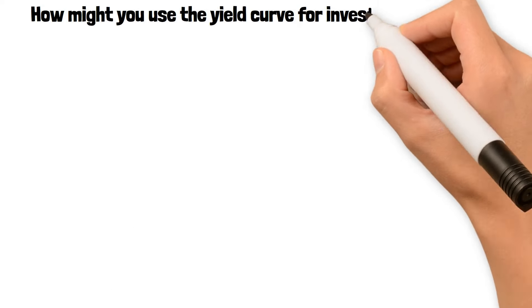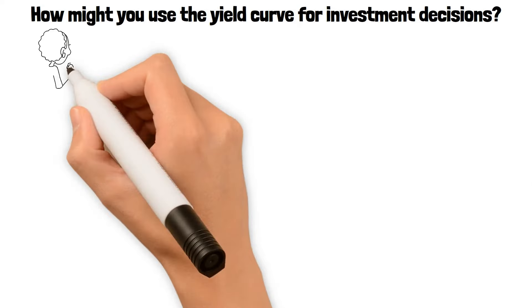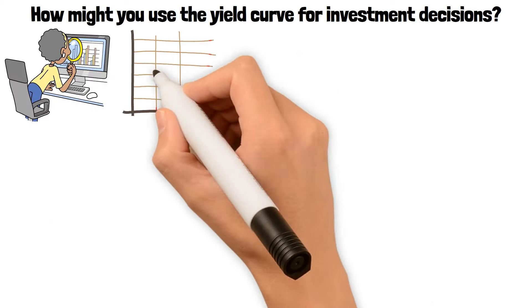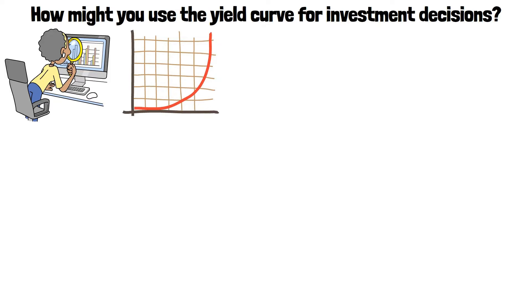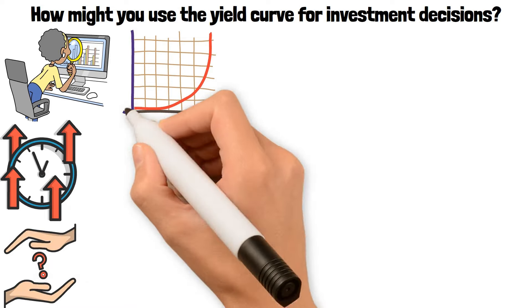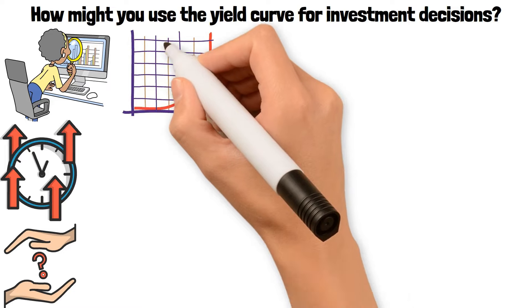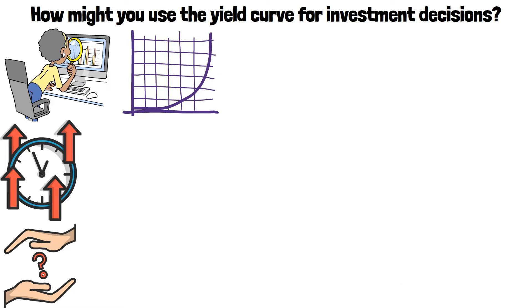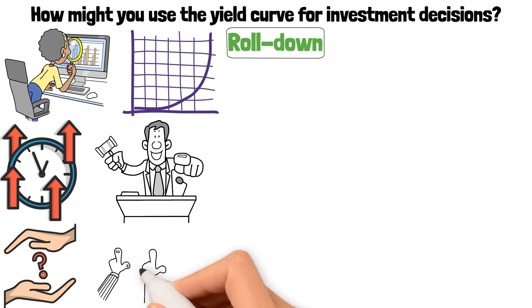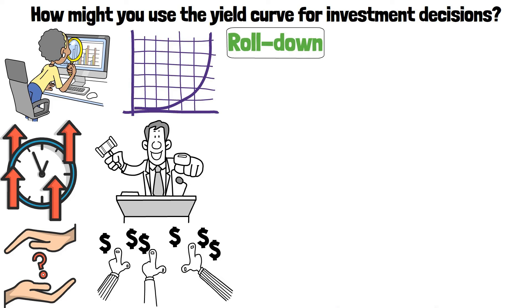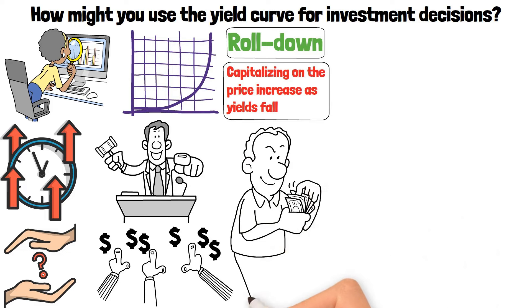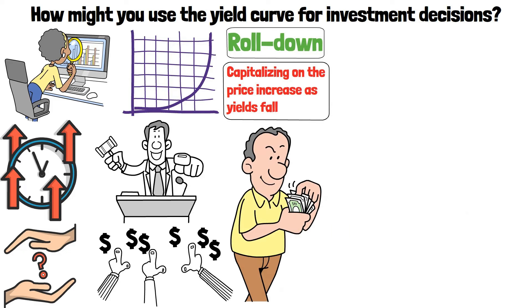How might you use the yield curve for investment decisions? Well, let's set our course with some actual data. The yield curve gives us a snapshot of the market's expectations for interest rates and economic growth. But how do we use this to make investment decisions? Well, when the yield curve is stable or upward sloping, some investors employ a roll-down strategy. They buy bonds and sell them as they roll down towards maturity, capitalizing on the price increase as yields fall.